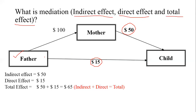Please understand the difference between the indirect and the direct effect. The father giving money to the child directly is known as the direct effect — the independent variable has a direct impact on the dependent variable. But there are also paths established through another variable; this path is known as the mediation path or indirect effect. The $50 are going to the child indirectly, not directly — so this is the indirect effect, and the $15 path is the direct effect.